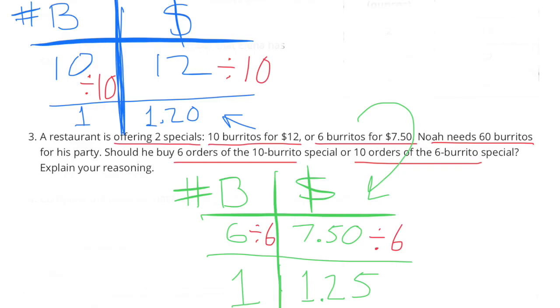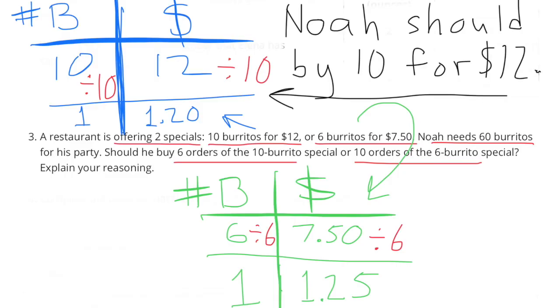In green on the bottom, 6 divided by 6 is 1. $7.50 divided by 6 is $1.25. Noah should buy the special that offers 10 burritos for $12.